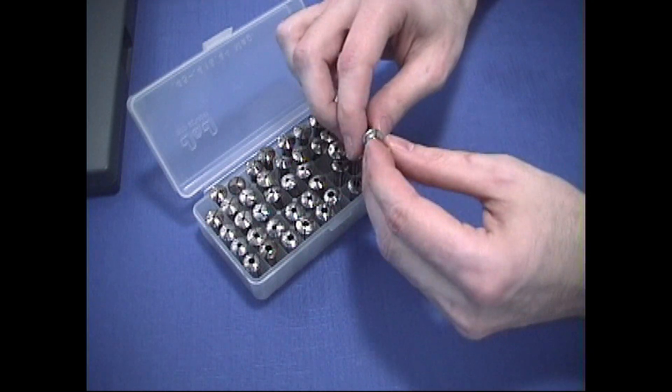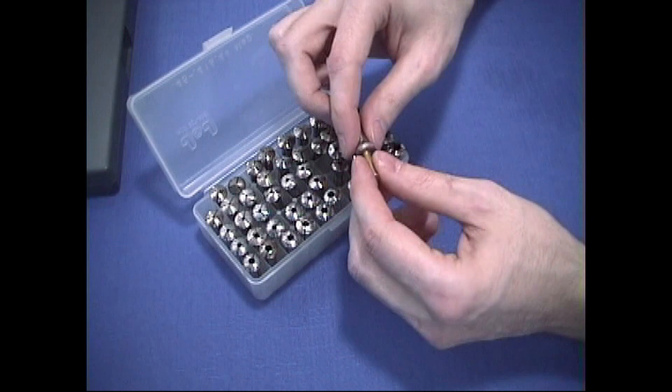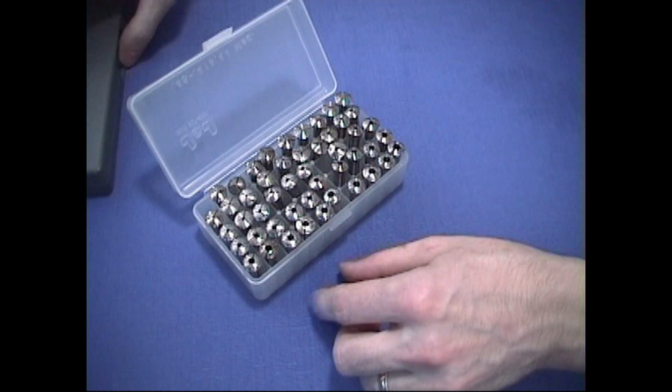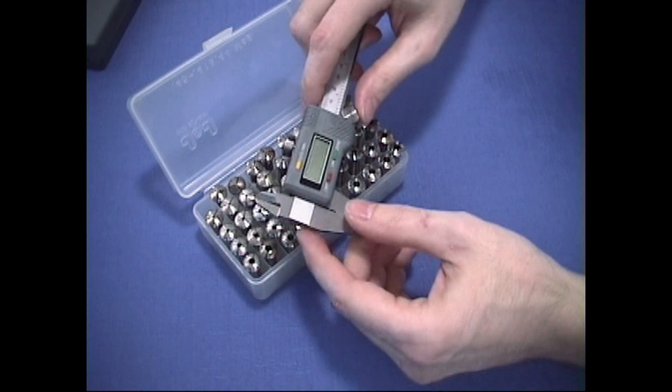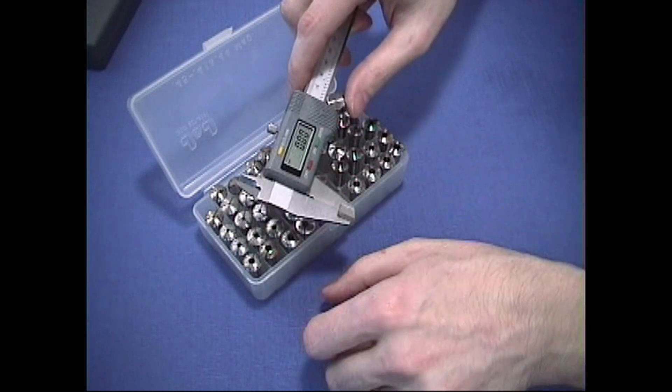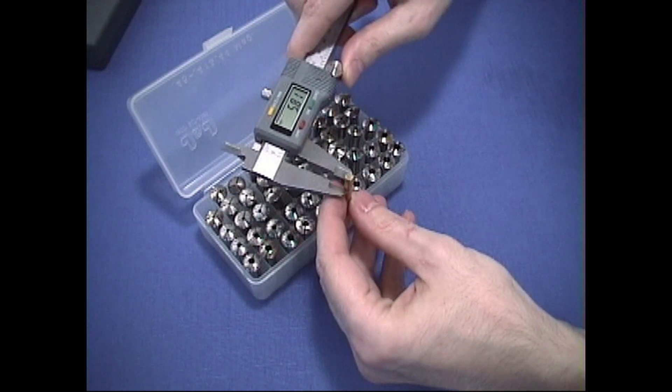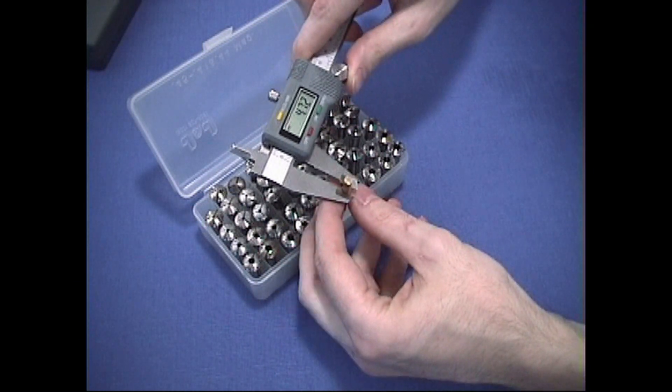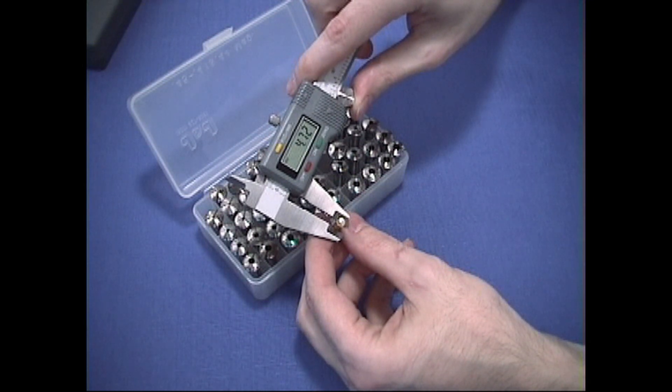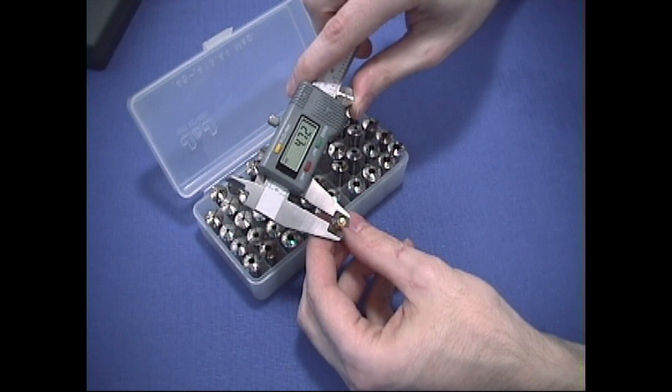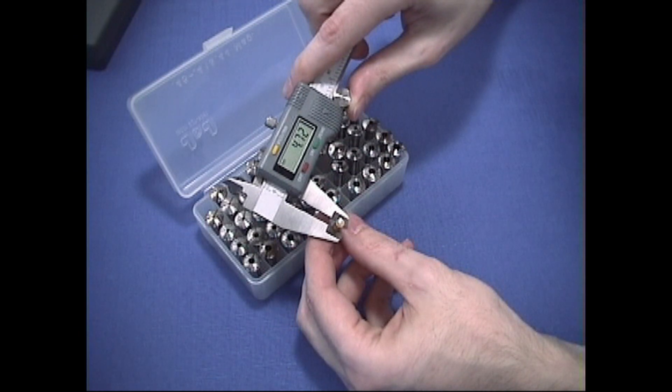Another way you can check for what you need is take your micrometer and turn it on. Make sure you're on millimeter and measure your piece of work. All right, it's saying 4.72 millimeters, or basically that would be slightly larger than a 47.